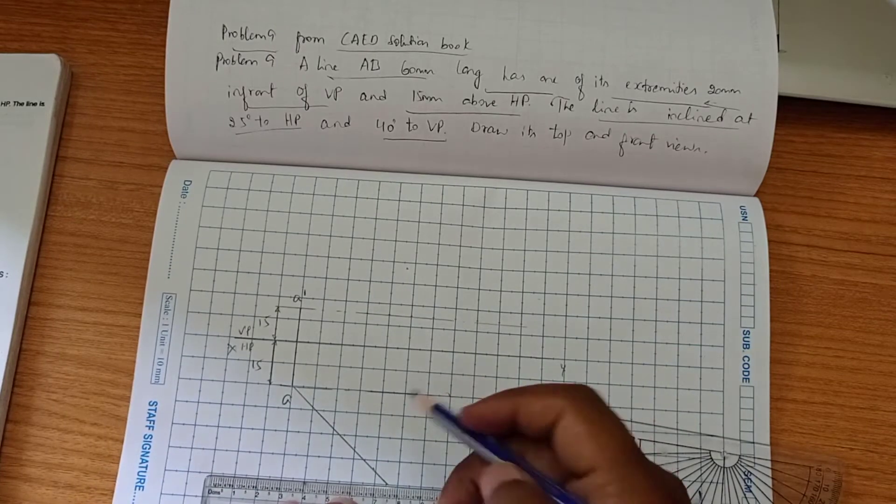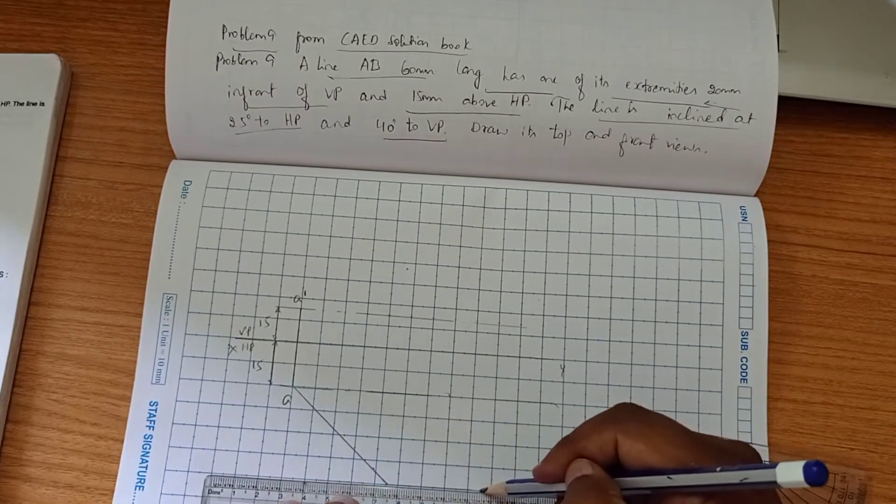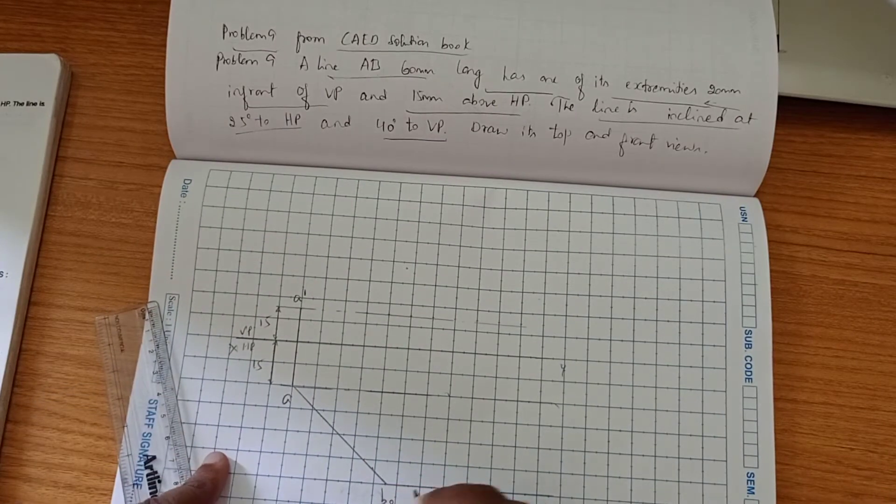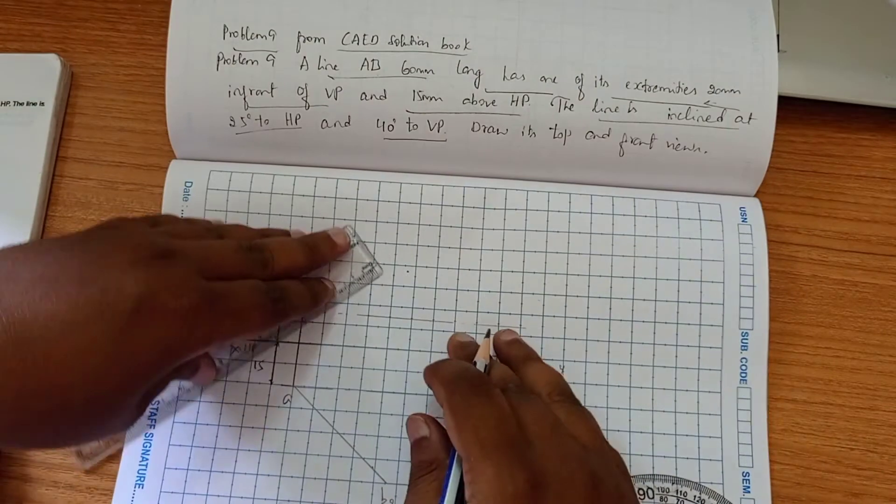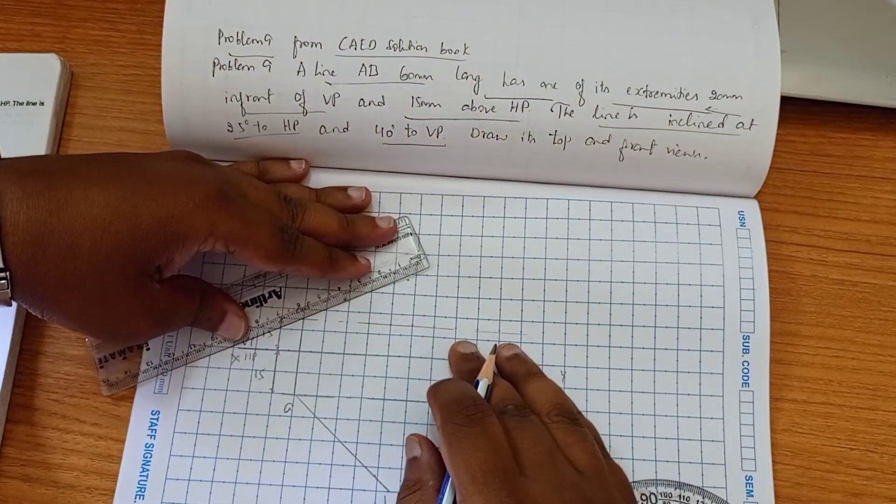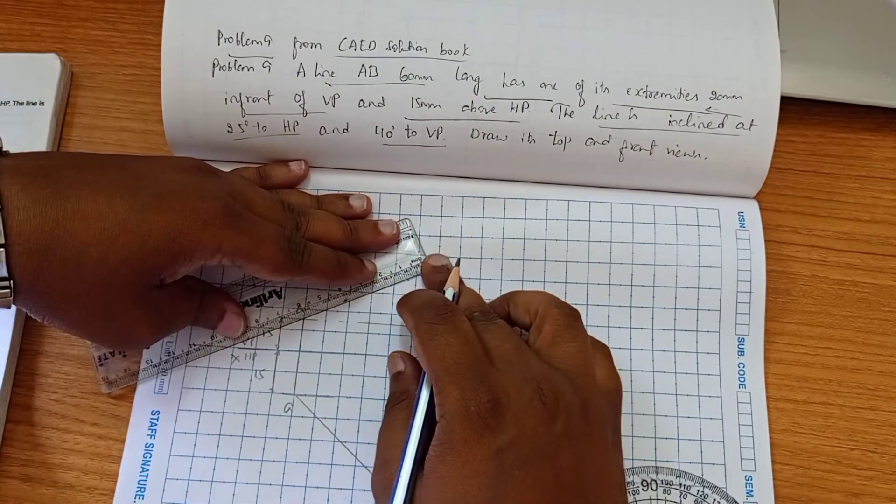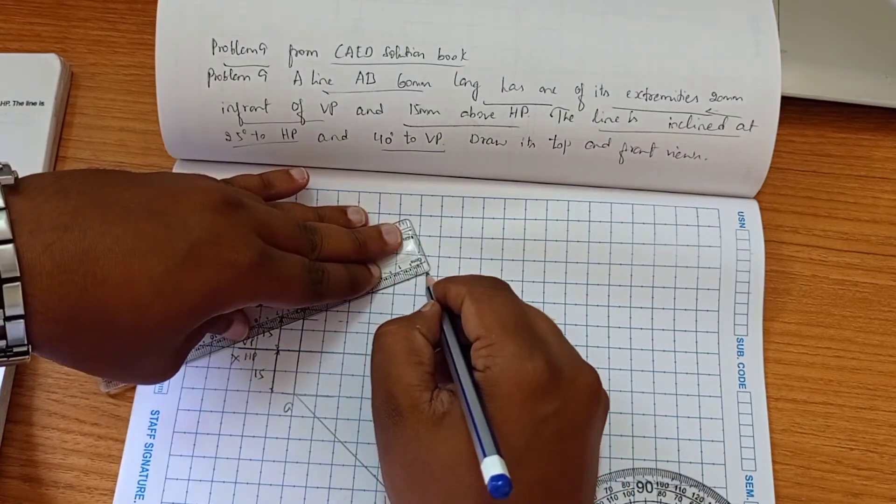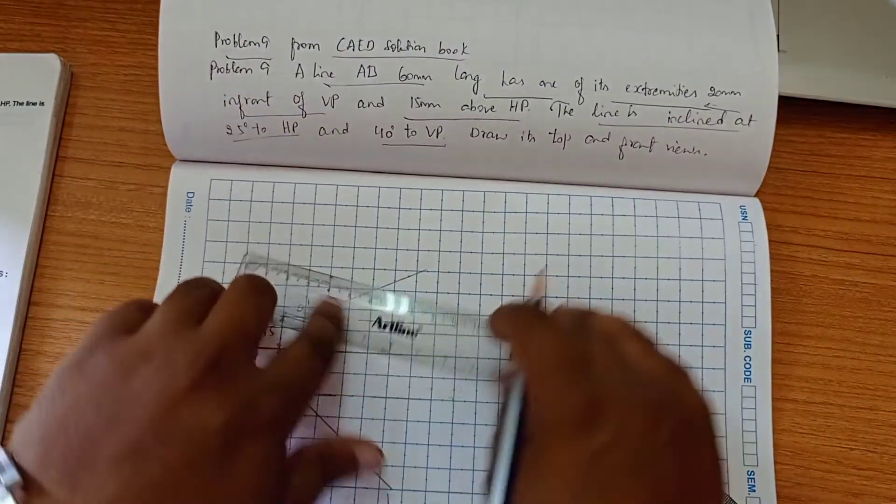We have to draw this extremities. Another block slope. This here is AB2 and the length of 60 we have to draw.